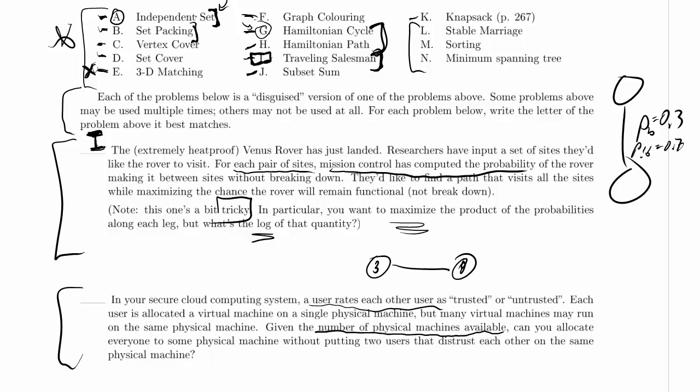Setpacking, maybe, except that with setpacking, we're concerned about more complex constraints, like five users that want to form a basketball team together or something, rather than two users, always two, that trust or distrust each other. So probably not setpacking.